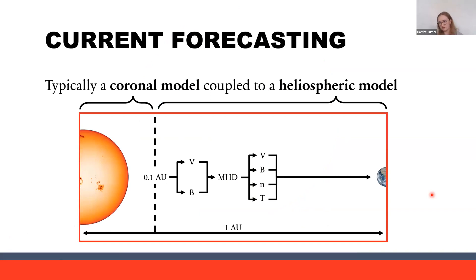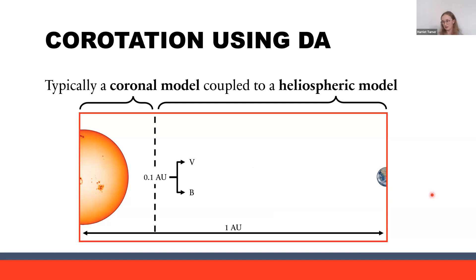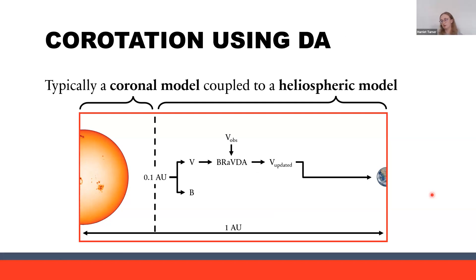In using DA we take the solar wind speed from the inner boundary, use that in BRAVDA along with observations of the solar wind, which leads to an updated solar wind speed that can then be used for forecasting at Earth.